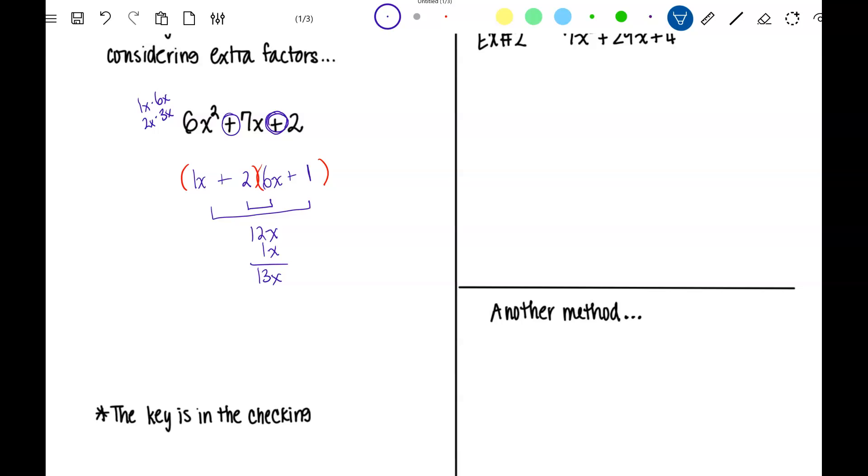So since the only two factors of 2 are 1 and 2, I know that I've got to try something different for 6x squared. So I'm going to try 2x and 3x. I'm going to check the inside product and outside product. Here I have that's 6x and that's 2x, which again is 8x.